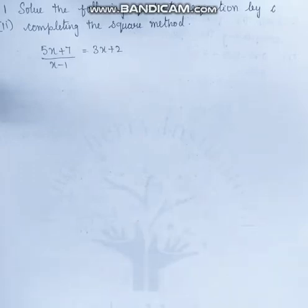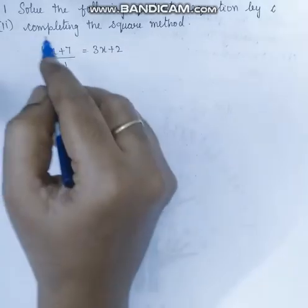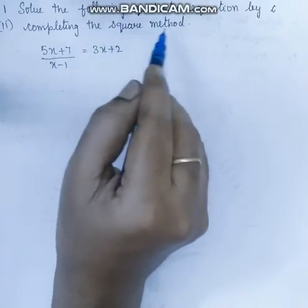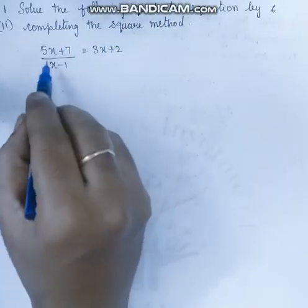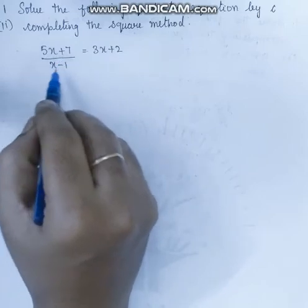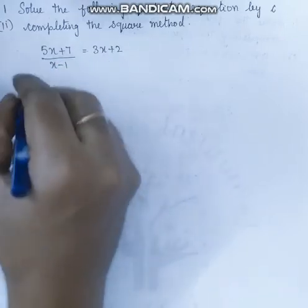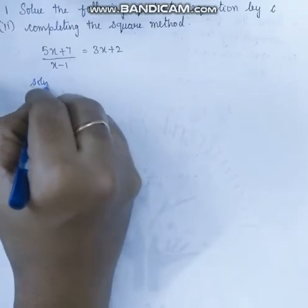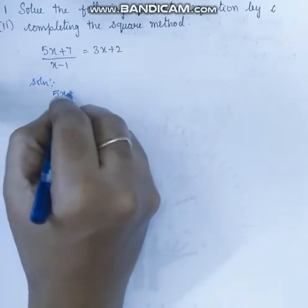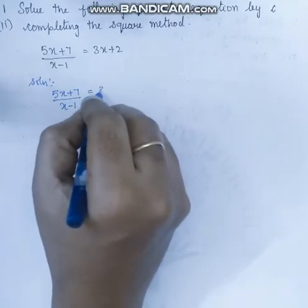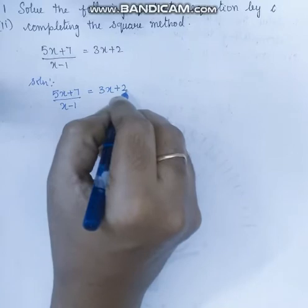Good morning. Next problem. Exercise 3.11, first second sum. Solve the following quadratic equation by completing the square method. We have: 5x plus 7 divided by x minus 1 is equal to 3x plus 2.